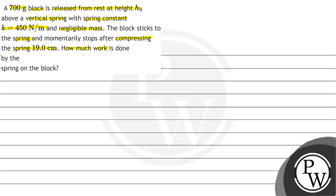How much work is done by the spring on the block? In this question we need to find out the value of work done by the spring on the block. A 700 gram block is released from rest at a height H0 above a vertical spring with spring constant 450 N per meter and the mass is negligible. The spring is compressed 19 cm. We need to find out the work done by the spring on the block.